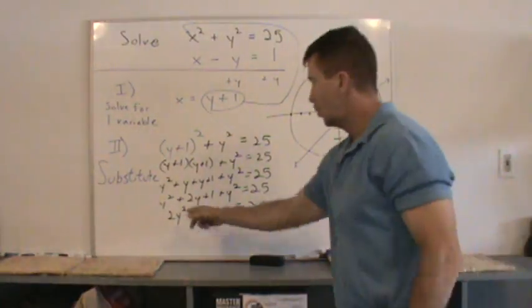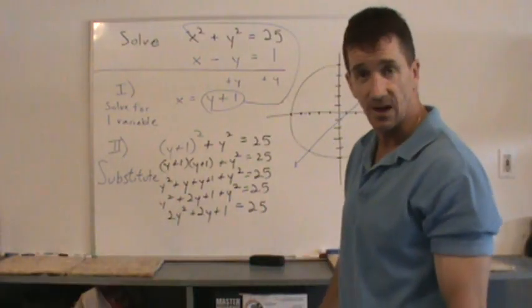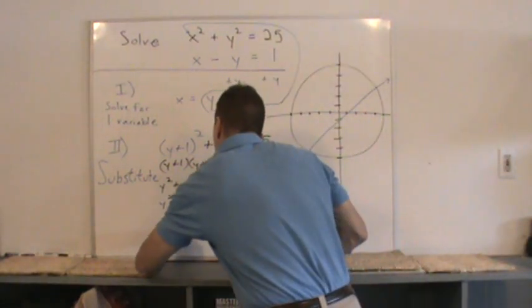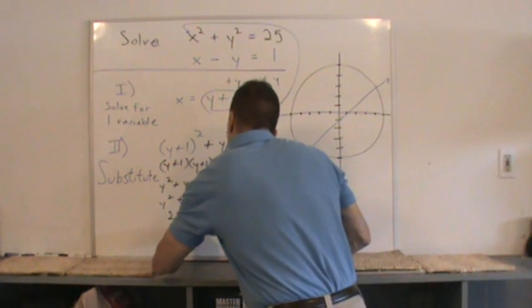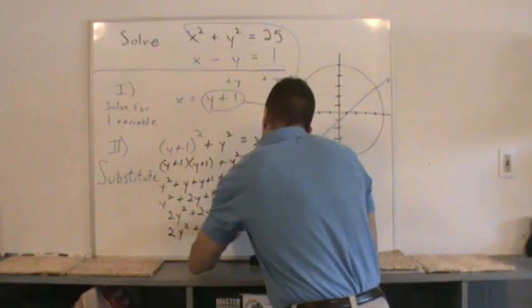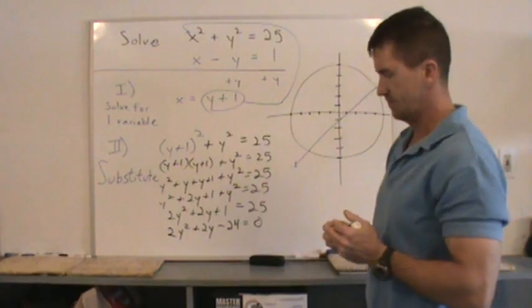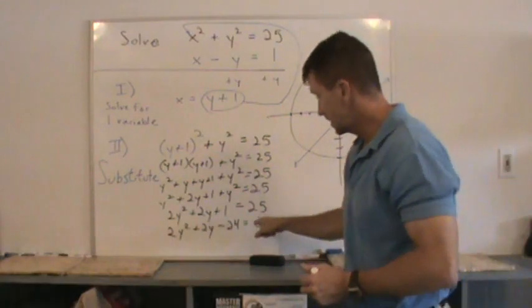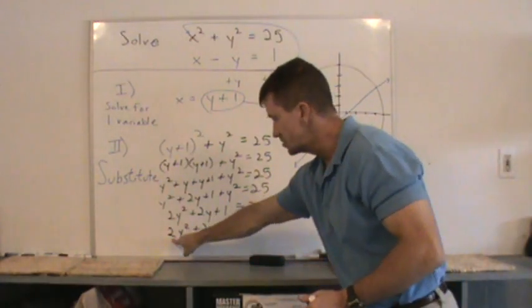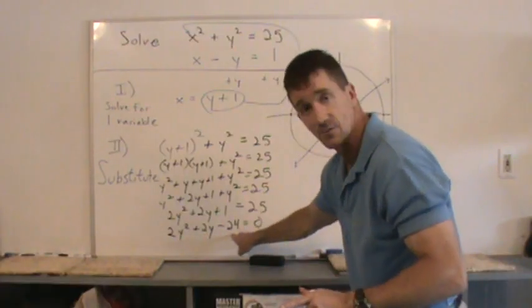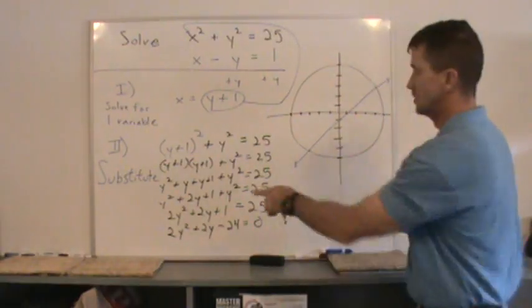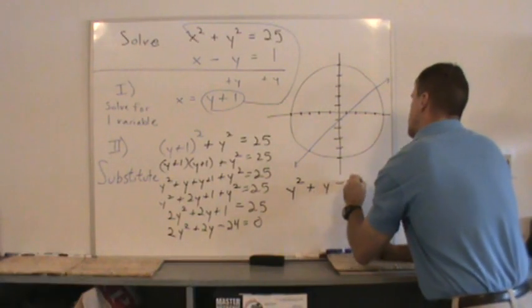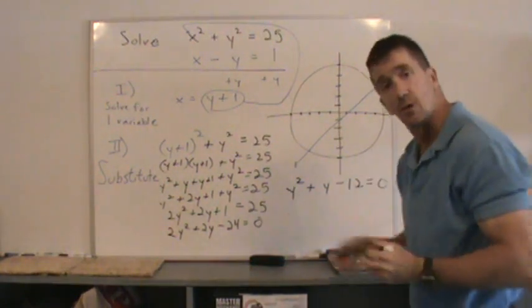So since it has a y squared, that's quadratic, I'm going to try to factor this. If I can't factor it, I'll use the quadratic formula. I'll subtract 25, set this whole thing equal to 0. I get 2y squared plus 2y minus 24 equal to 0. Now, I notice all these are even. So I'm going to divide by 2 on both sides of the equation. This becomes y squared plus 1y minus 12 equals 0.